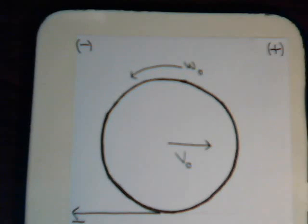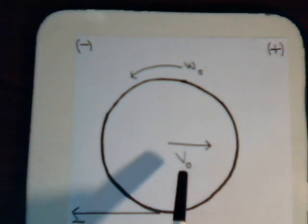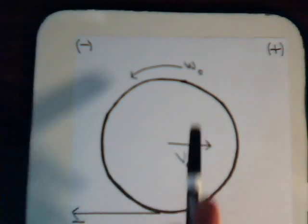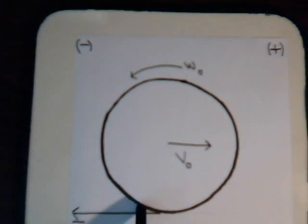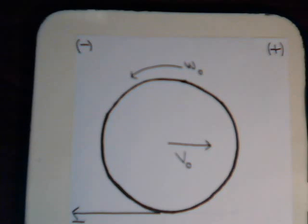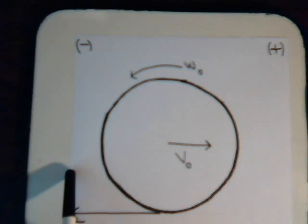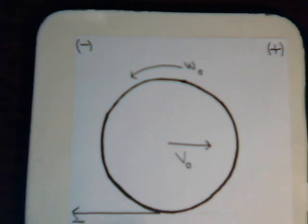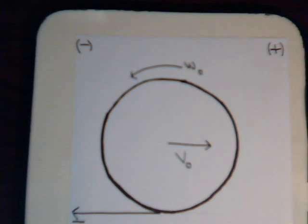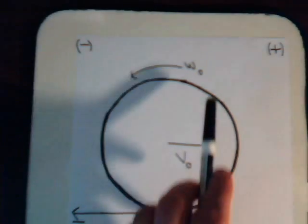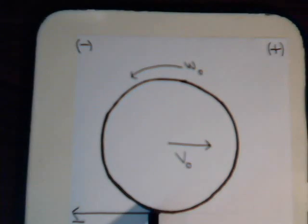It could be a bowling ball that makes contact with the surface, and just at that moment it has values V-naught and omega-naught as it tries to slide across the surface. There will be a frictional force in the opposite direction. Or it could be a billiard ball that was struck by a cue stick below the center line, and immediately after it was struck, it has values V-naught and omega-naught trying to slide across the surface. Again, we have the frictional force in the opposite direction.